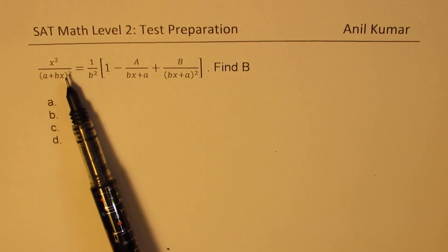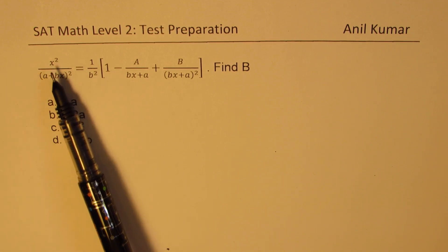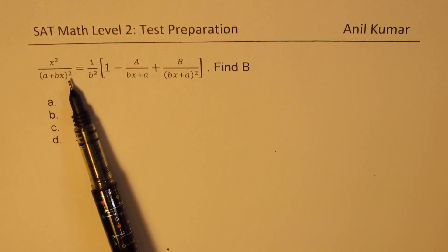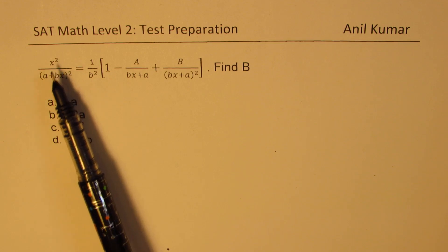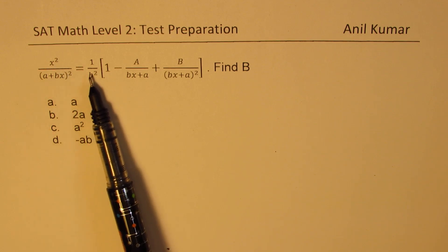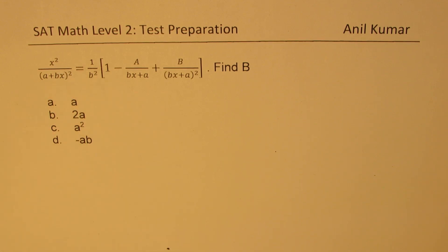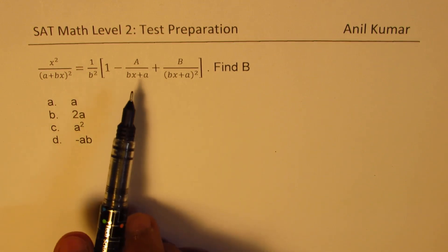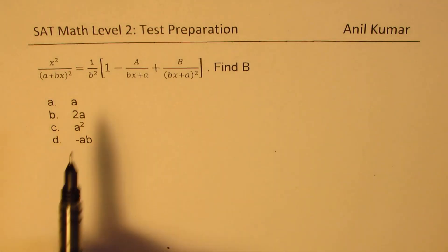Since the degree of numerator and denominator is the same, we first divide and get a whole number. You can pause the video and find the value of b. I'll show you a very neat way of doing it without going through the long division and the standard way.